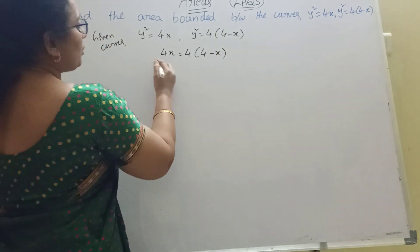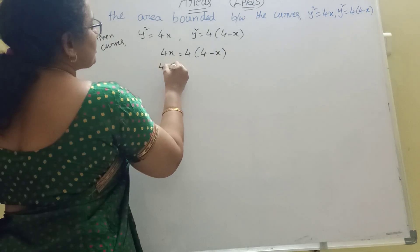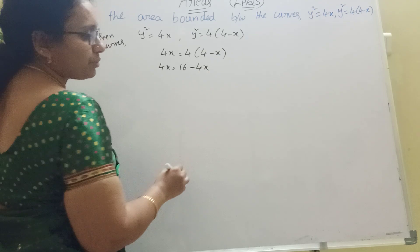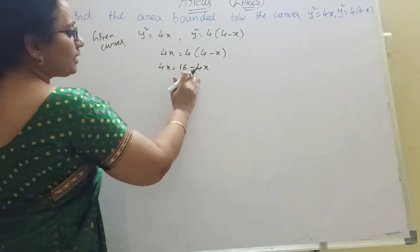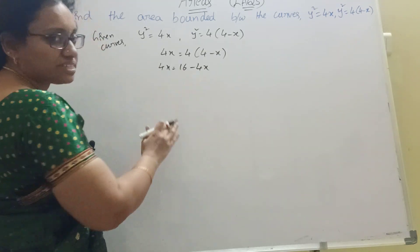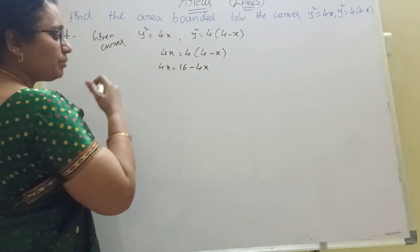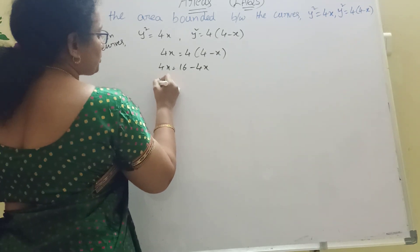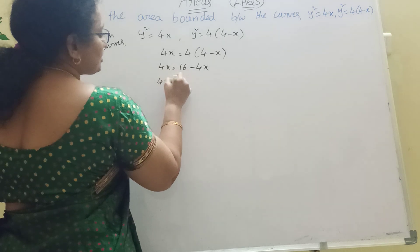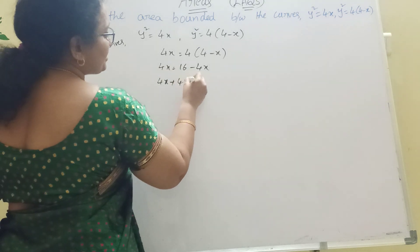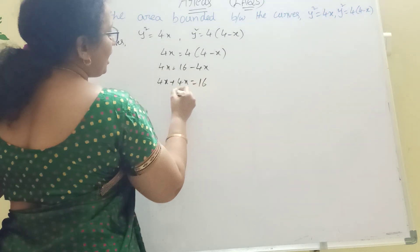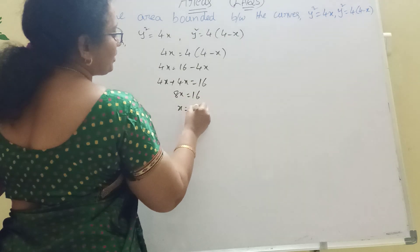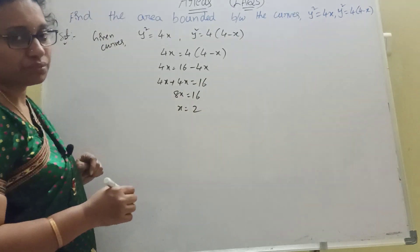Now, 4x equal to 16 minus 4x. Bringing 4x to the left-hand side: 4x plus 4x equal to 16, so 8x equal to 16.